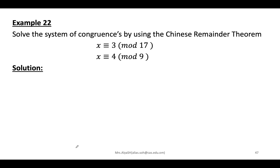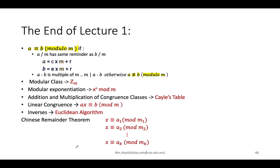Try the practice problem using the Chinese Remainder Theorem yourself. This brings us to the end of Lecture One. We covered: congruence definition, modular classes, addition and multiplication of congruence classes, and today's topics — linear congruence, inverses, and the Chinese Remainder Theorem. Thank you and see you in the next lecture.